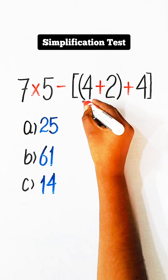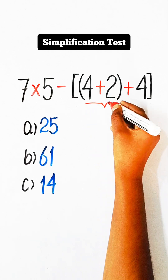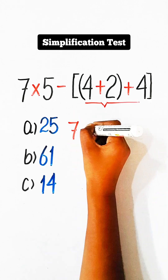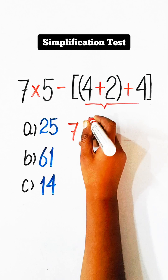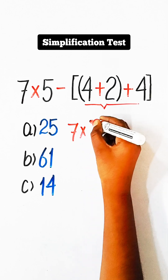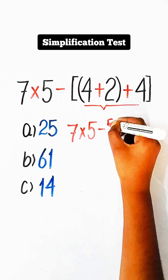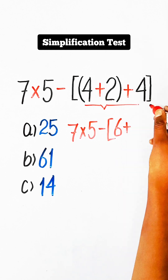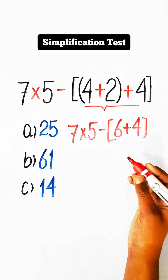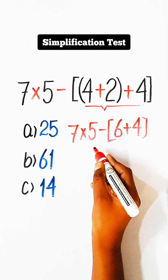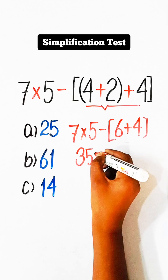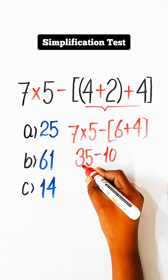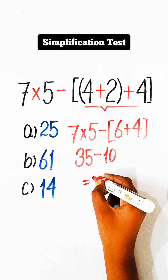First we have to solve the bracket part. So we write 7 multiplied by 5 minus — 4 plus 2 is 6, plus 4. Then 7 multiplied by 5 is 35, minus 6 plus 4 is 10, and 35 minus 10 equals 25.